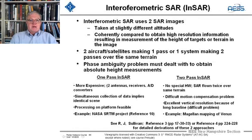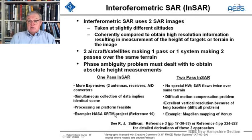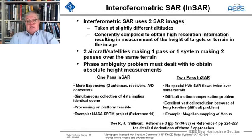You can do this either by having the aircraft or satellite make one pass with two antennas at different altitudes, or one system making two passes over the same terrain. The phase ambiguity problem has to be dealt with to obtain absolute height measurements. With the one-pass INSAR, it's more expensive because you have two antennas, receivers, and A-to-D converters, but you can process it on the platform. NASA's SRTM project — reference 10 — used a SAR on the shuttle with antennas added at a different height to measure terrain height data as the shuttle viewed Earth.